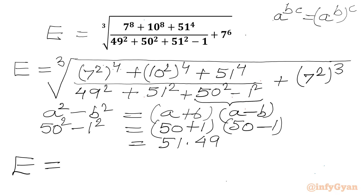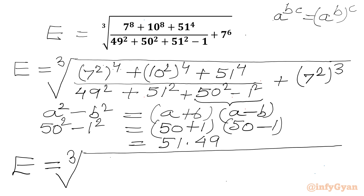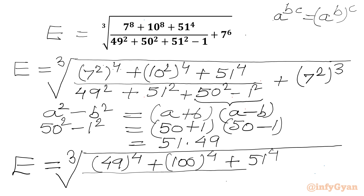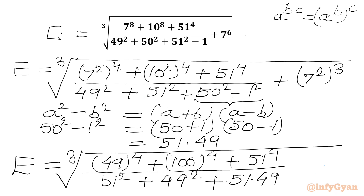Now, 7 squared is 49. Let's write our expression: cube root of 49 to the power 4, plus 100 to the power 4, plus 51 to the power 4, over the denominator. We write 51 squared first, then 49 squared, and for 7 squared whole cubed, we write 49 cubed.